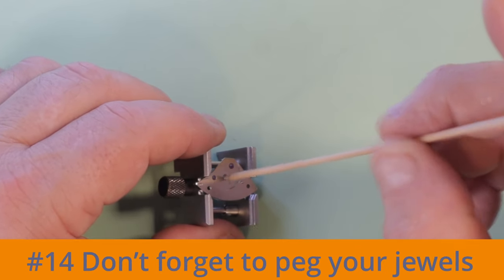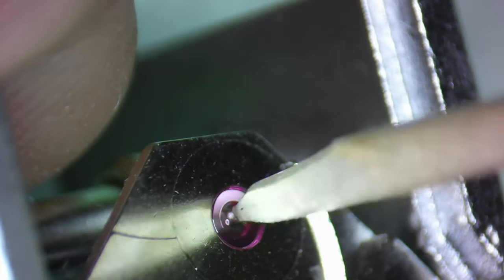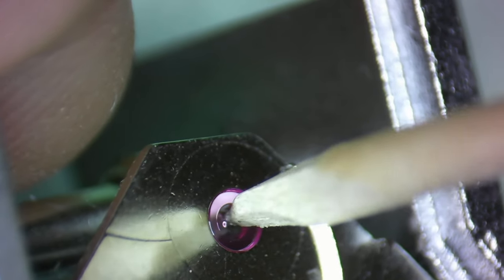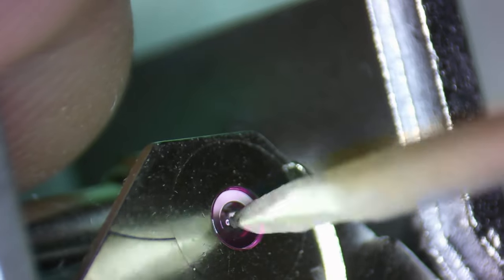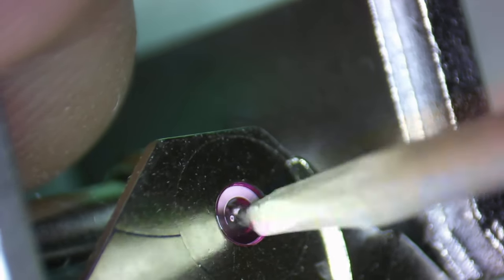Pegging the jewel holes is a step that's often overlooked by new watchmakers because they don't understand that not doing it is going to affect their amplitude. It's always best to peg the jewels right during your pre-cleaning regiment and before you do your final clean and rinse.